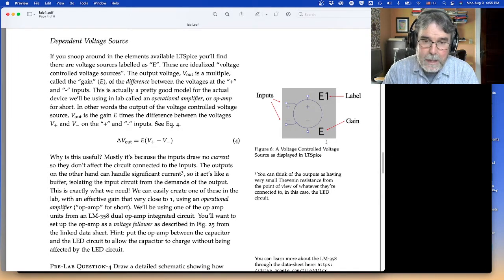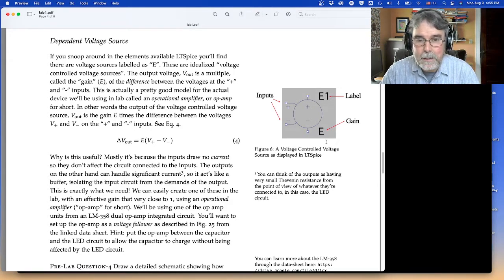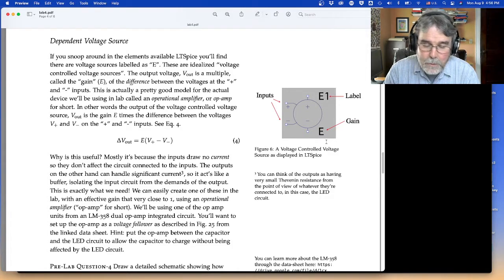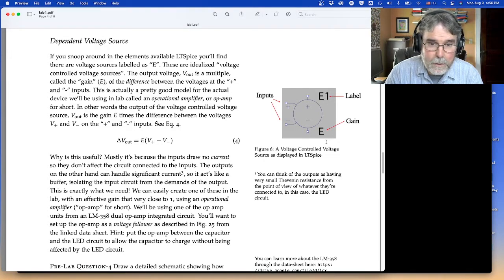Now, the thing is an op amp does not have a gain of 1. In fact, out of the box, you plug it in the circuit, it has a gain. Many of them have a gain of hundreds of thousands or a million. And so their gain is much, much higher. And there's a good reason for that. And that's what I want to talk about today.